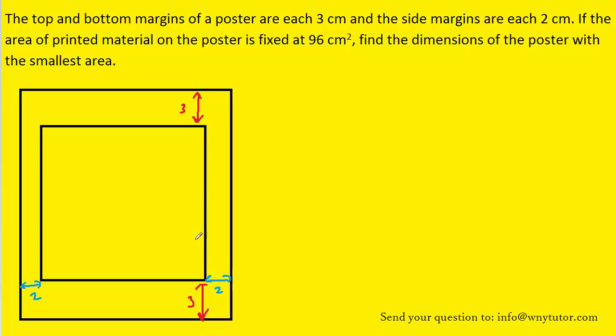Notice that the top and bottom margins are both labeled with three centimeters. The left and right margins are both labeled with two centimeters. The printed area of the poster would be this middle rectangle. We are told that the area of the printed material is 96 centimeters squared.